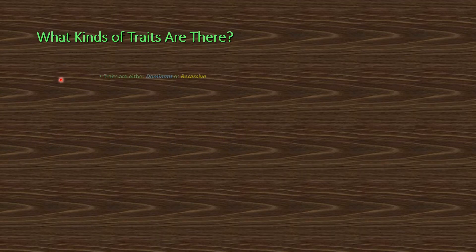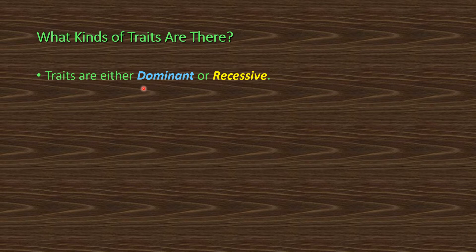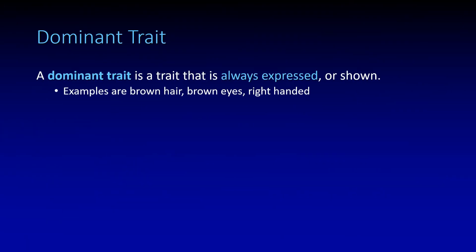What kinds of traits are there? There are either dominant or recessive traits. A dominant trait is a trait that is always expressed or shown. Examples are brown hair, brown eyes, right-handed, etc.